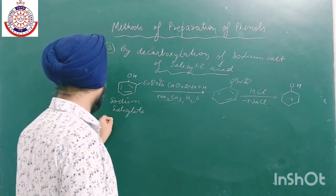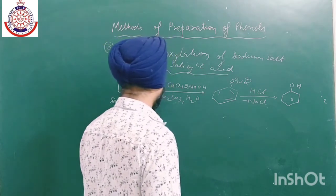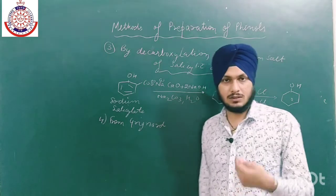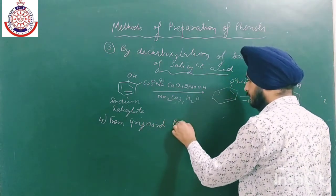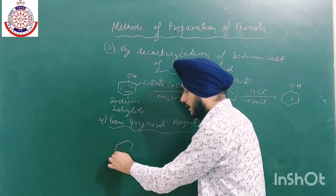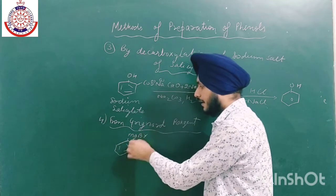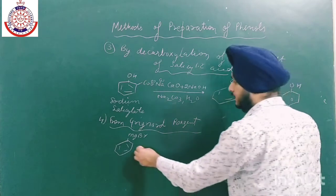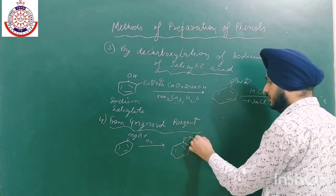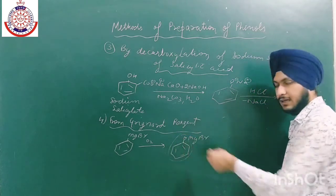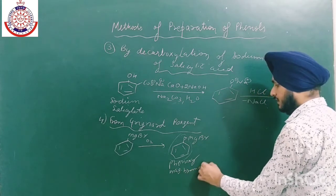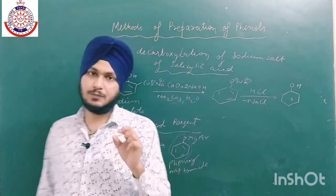The fourth method is from Grignard reagent. There are generally six methods total — four simpler methods and two industrial methods. For the Grignard method, we start with the Grignard reagent RMgBr and react it with oxygen to form phenoxy magnesium bromide, which has an ether-like structure — that is why we call it phenoxy magnesium bromide.